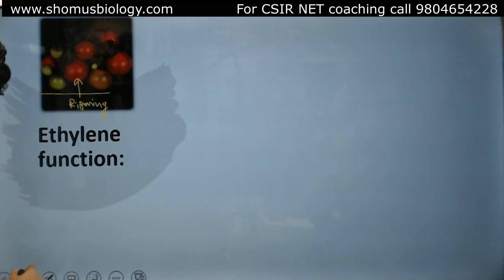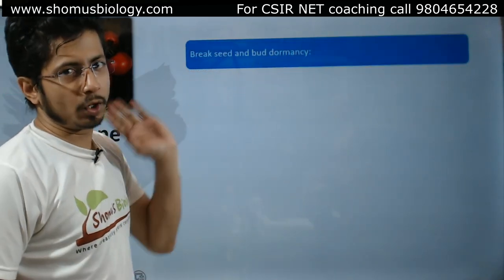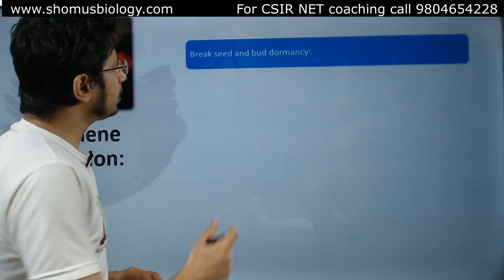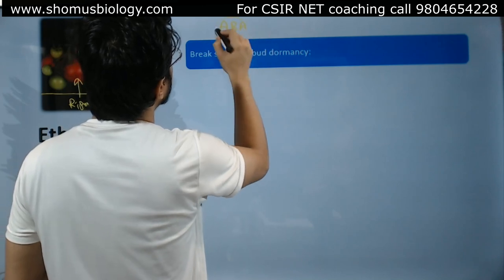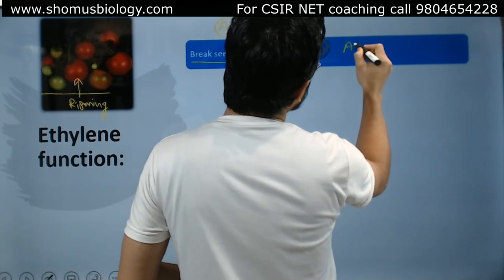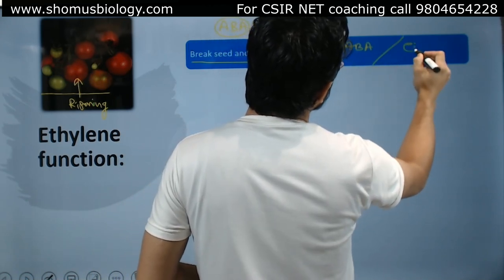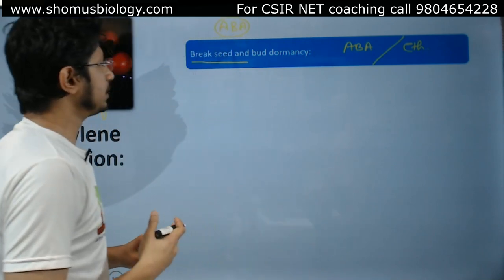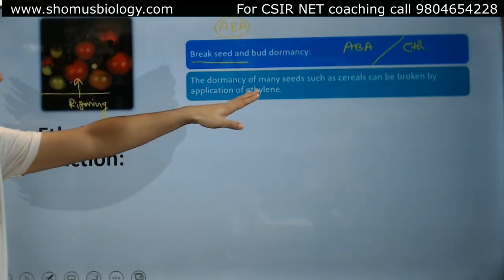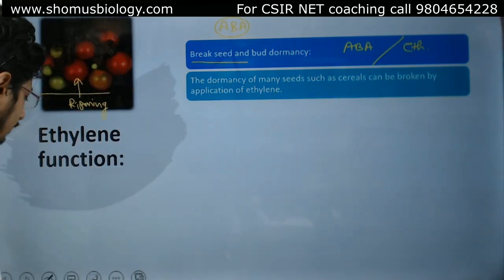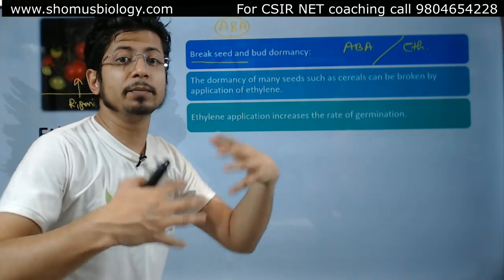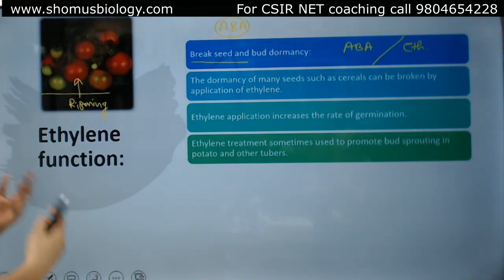Now, what are the functions of ethylene? Very simply, the first is ripening of fruit. The second is that it breaks seed and bud dormancy. Abscisic acid promotes bud and seed dormancy, but ethylene works inversely — it breaks that dormancy. Ethylene application increases the rate of germination, and ethylene treatment is sometimes used to promote bud sprouting in potato and other tubers.